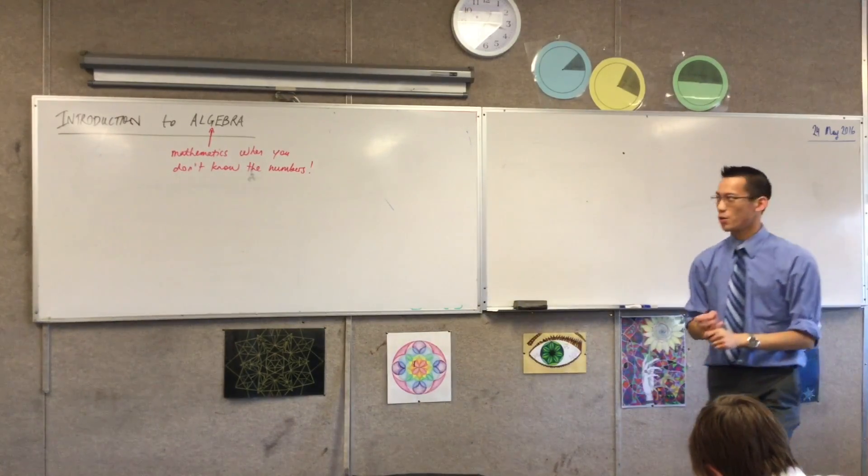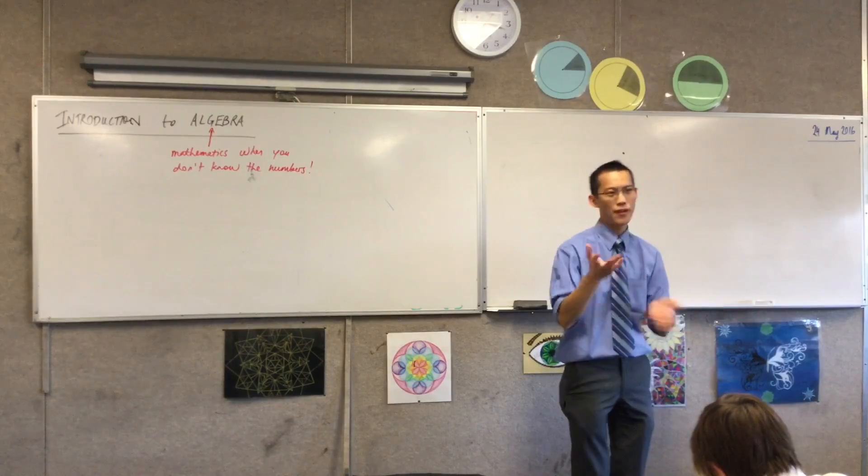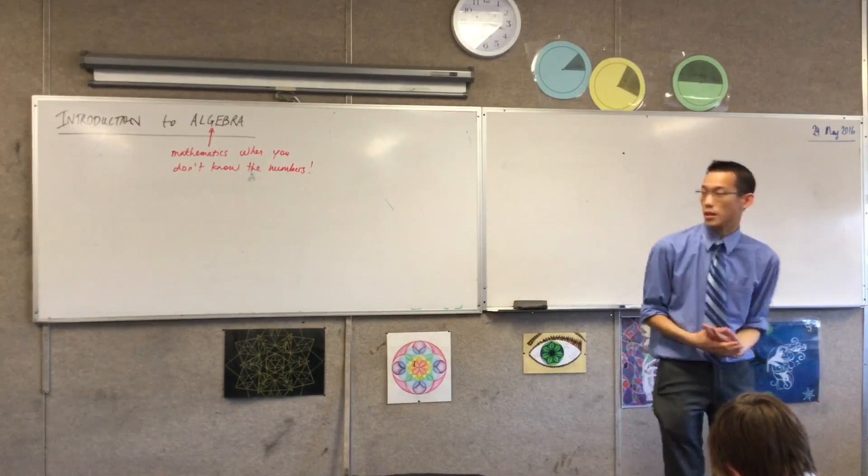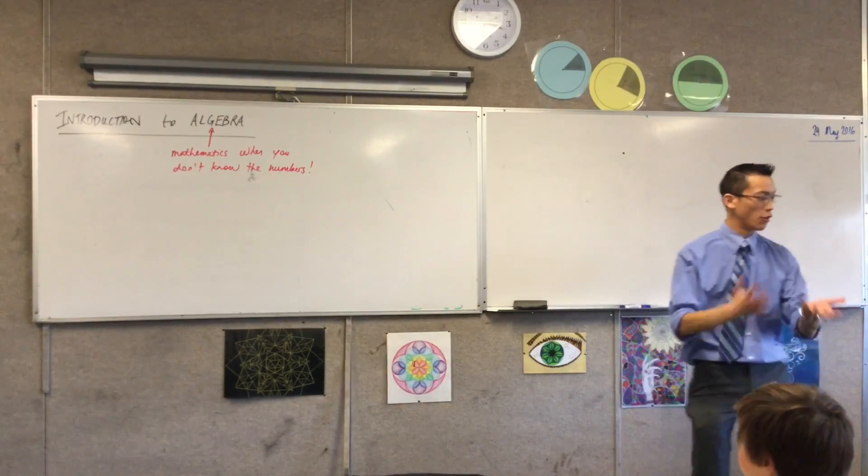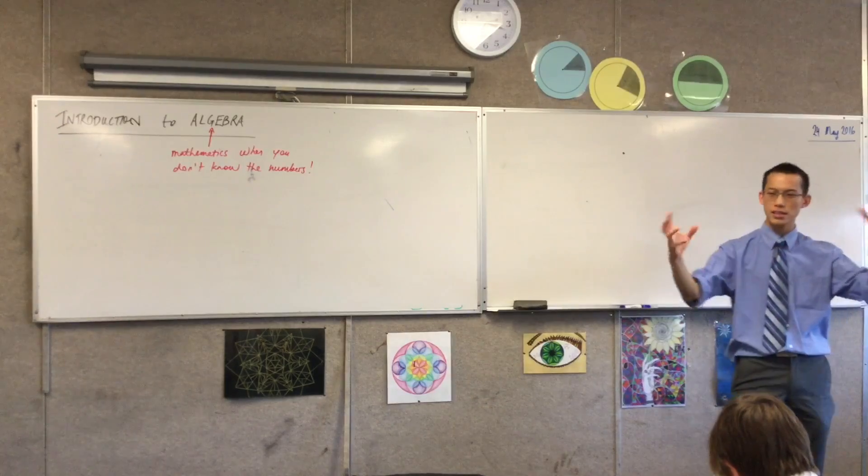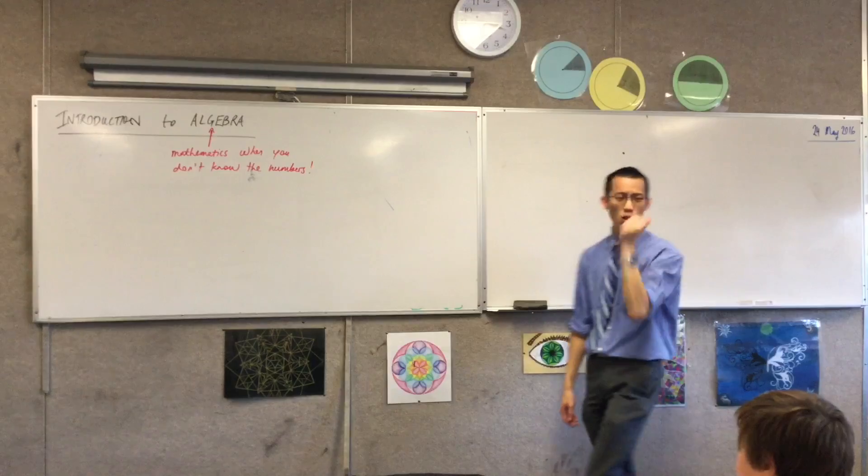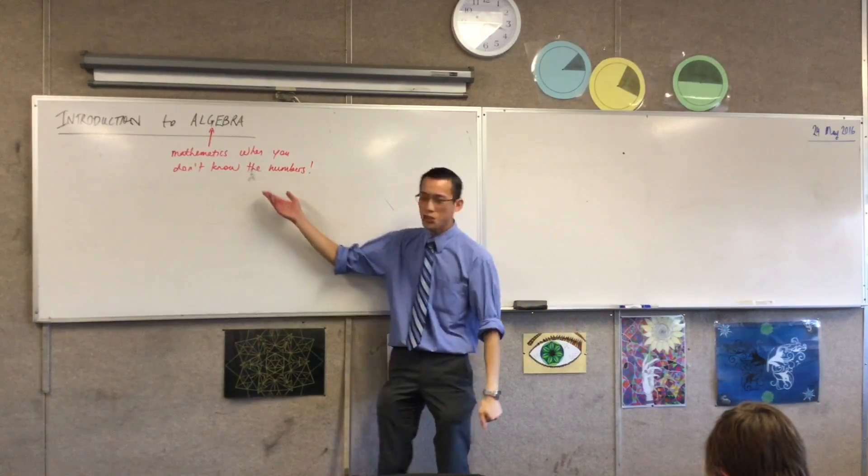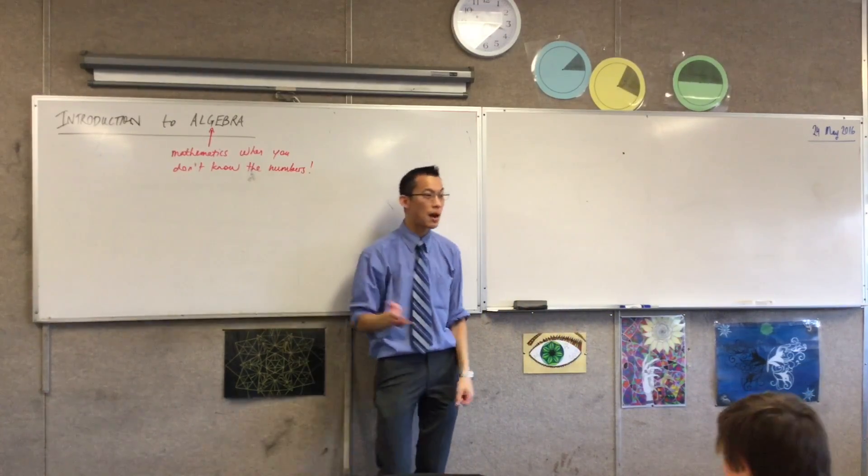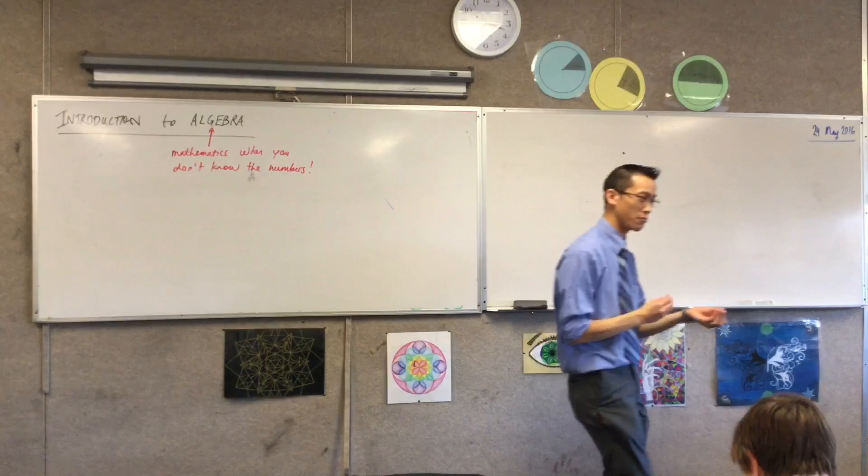We looked this morning at how if you have like 3 times 5 and 5 times 3, we saw, oh cool, they're the same thing. And you can work out what those are, we've been looking at fractions, you can do all kinds of things to work with them and get to an answer, right? But sometimes, we want to solve problems where you don't know what the numbers actually are, but you still want to work with them.